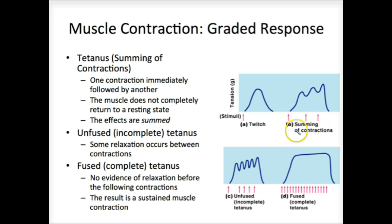The unfused and summing is what happens every now and then when you have that herky-jerky movement. If we didn't have the fusing of contractions, you wouldn't see smooth movement. It would literally look like robots on TV — that herky-jerky, very robotic movement. Without the fusing, that's what we would see in our own movement.